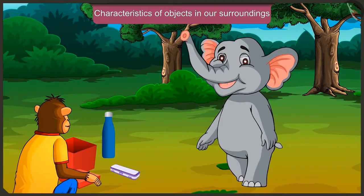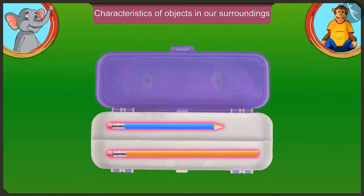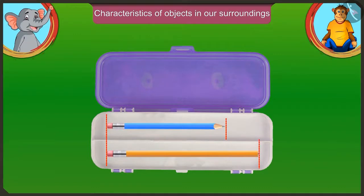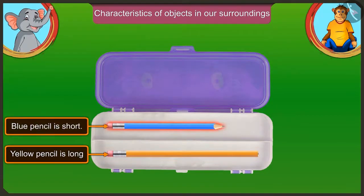What is there in this pencil box? There are two pencils in the pencil box. Look, Jaggu. In this pencil box, the yellow pencil is longer than the blue pencil. Yes, this means that the blue pencil is small. Yes, the yellow pencil is long and the blue pencil is short.